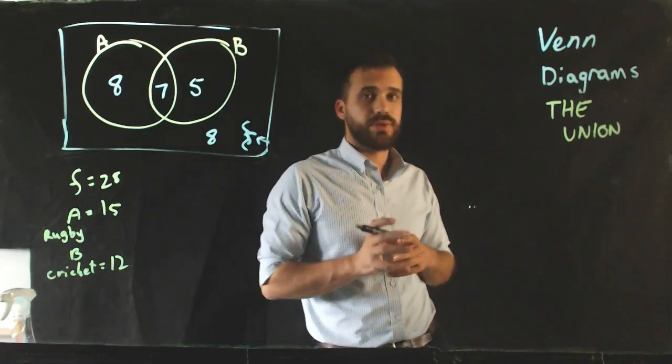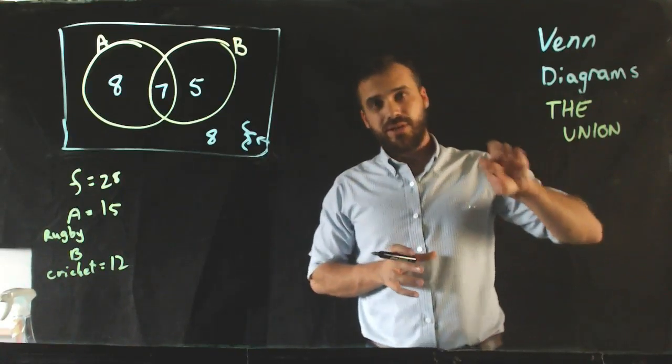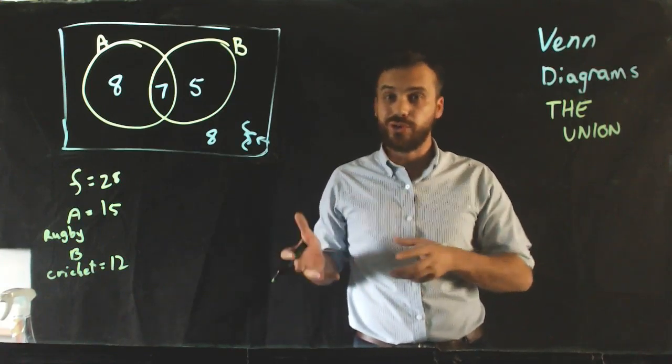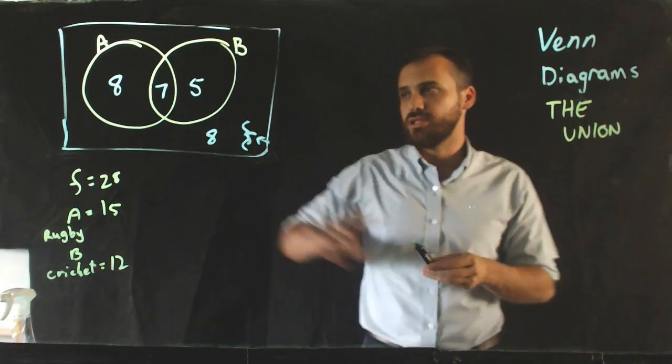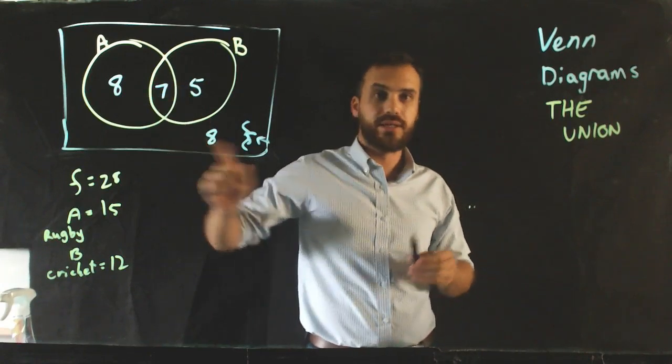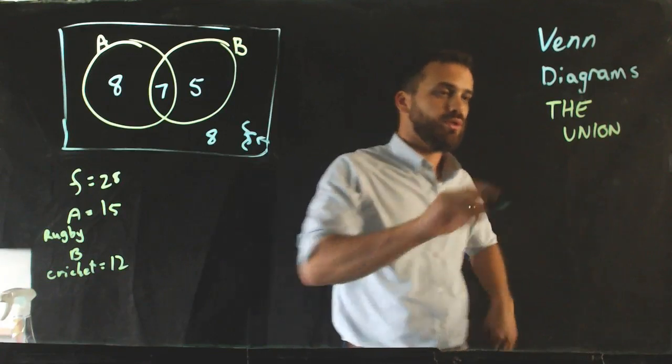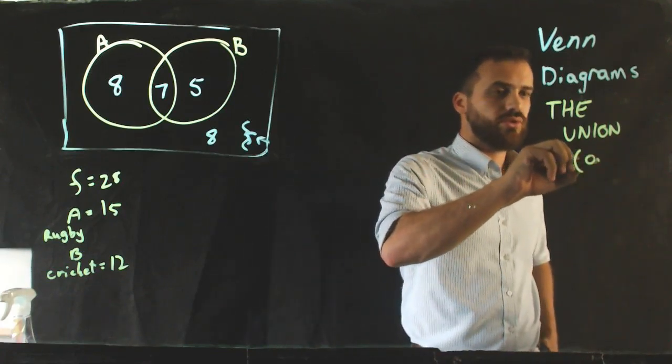So, still on Venn Diagrams, but this time I want to talk about this, the union. Okay, so we've looked at complements, which means not. We've looked at intersections, which is this little piece in here. Now, the simplest word I can use for union would be this, or.